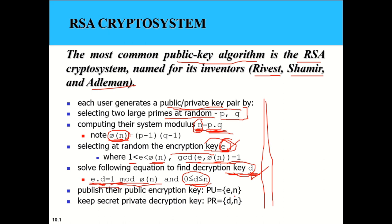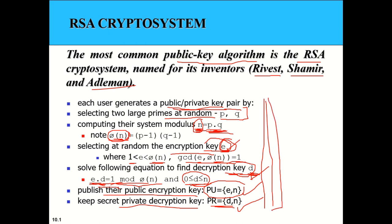Once we have both keys, we publish the public encryption key and keep the private decryption key as a secret. Everyone in the community has the public key of every other person. If user A wants to send a message to user B, A encrypts with B's public key and sends it; B then decrypts using its own private key. This is the key generation process in RSA.